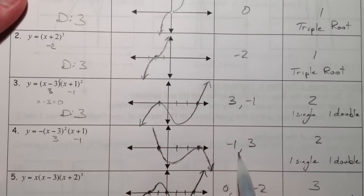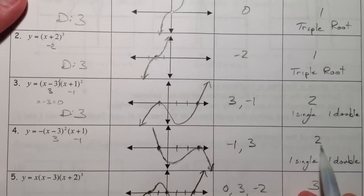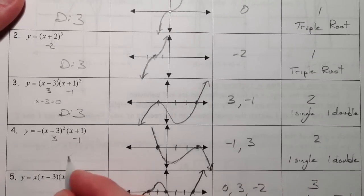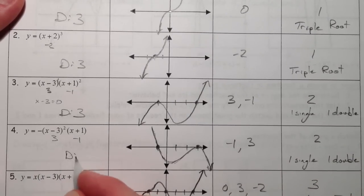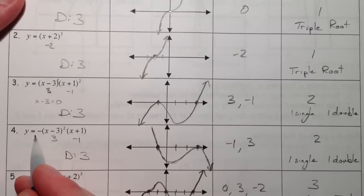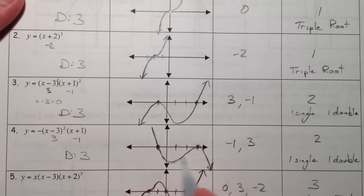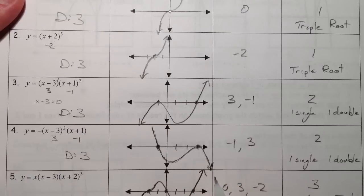So all those ones where it just crosses, those are what we call a single root. The x-intercepts are negative one and three — one single, one double, two x-intercepts. Notice that this is degree three as well, but it has a negative out front.